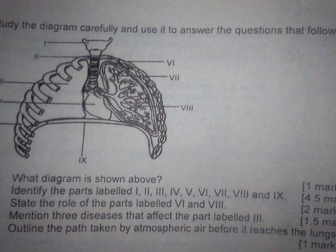What diagram is shown above? Number 2: Identify the parts labeled I to IX. Number 3: State the roles of the parts labeled VI and VIII. Number 4: Mention three diseases that affect the parts labeled III. Number 5: Outline the path taken by atmospheric air before it reaches the lungs.